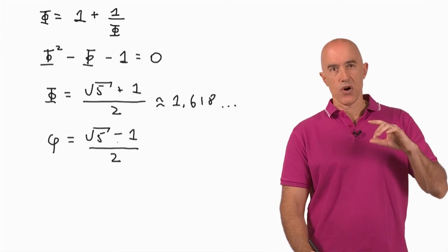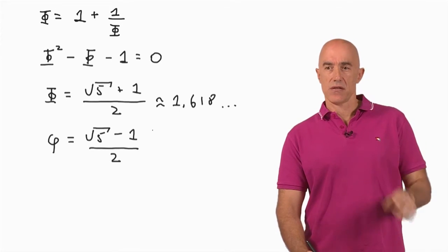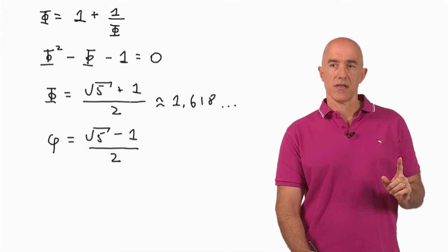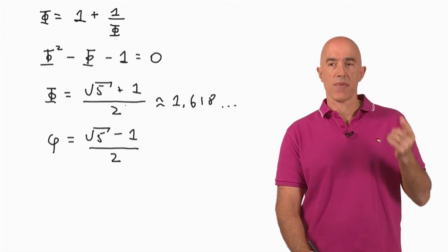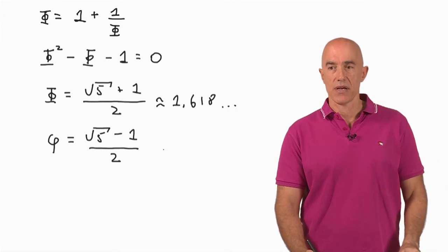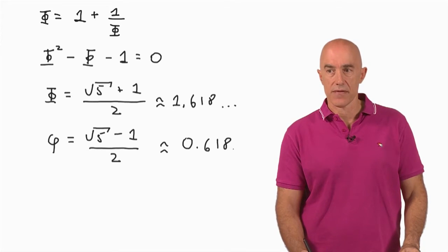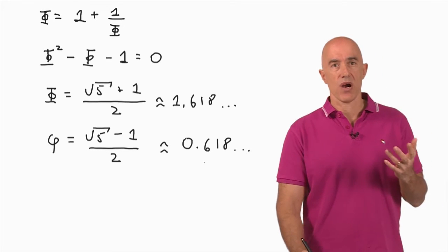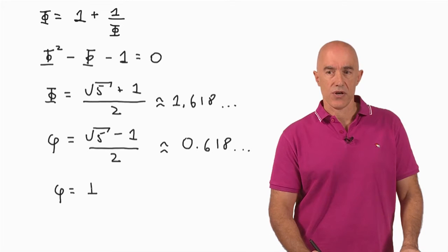What is the difference between the golden ratio and the golden ratio conjugate? Well, the golden ratio conjugate is 1 less than the golden ratio. If we subtract 1 from capital Phi, then the 1 half minus 1 becomes minus 1 half. So 1 less than the golden ratio is just going to be 0.618 something. So it's just the fractional part of the golden ratio. So we can write Phi equals the golden ratio minus 1.